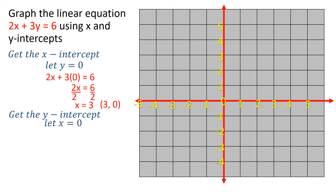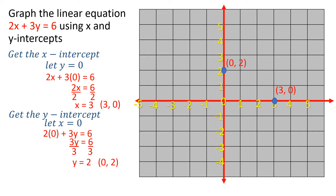In finding the y-intercept, we let x = 0. The equation becomes 2(0) + 3y = 6. Since 2 times 0 is 0, we have 3y = 6. Dividing both sides by 3, y = 2. Thus, the y-intercept is (0, 2). After getting the intercepts, we plot the points: (3, 0) is along the x-axis and (0, 2) is along the y-axis. Connect them, and that is the graph of 2x + 3y = 6.